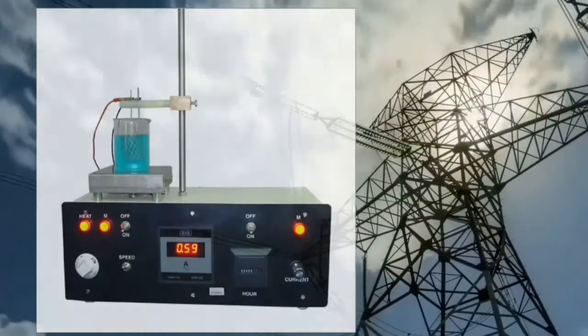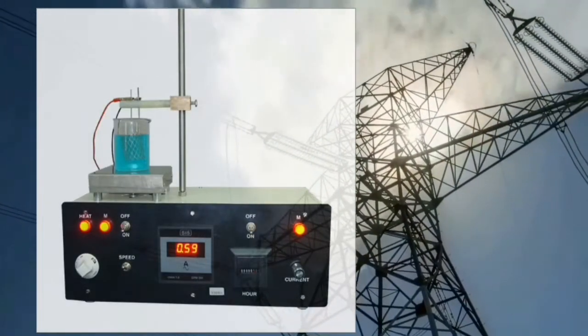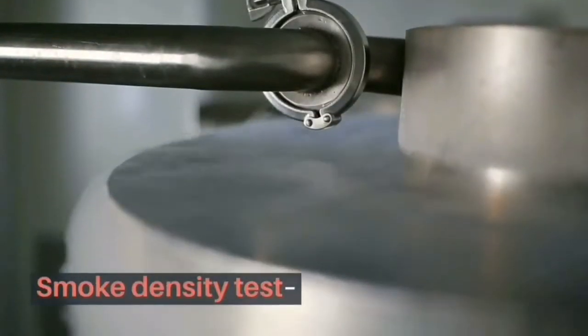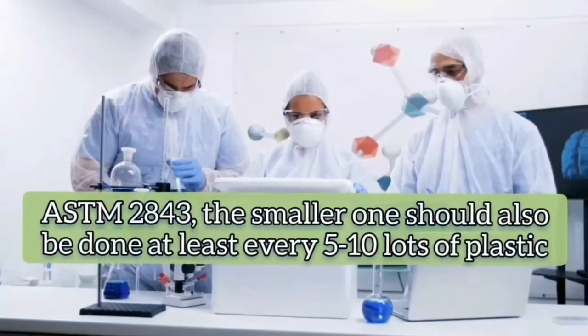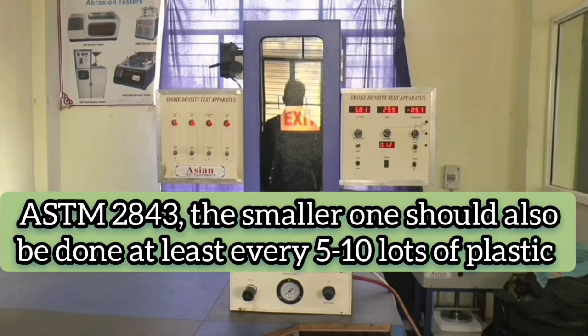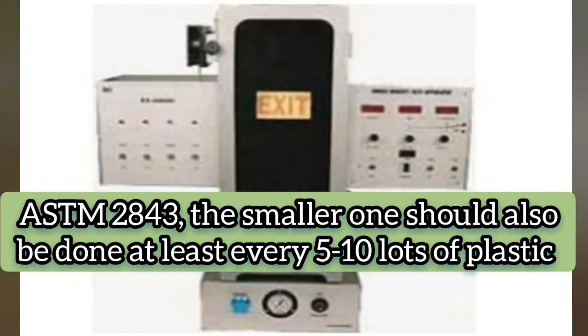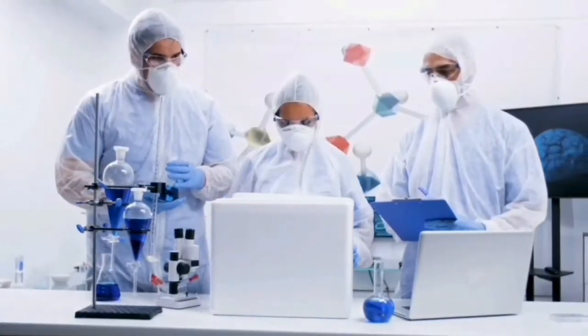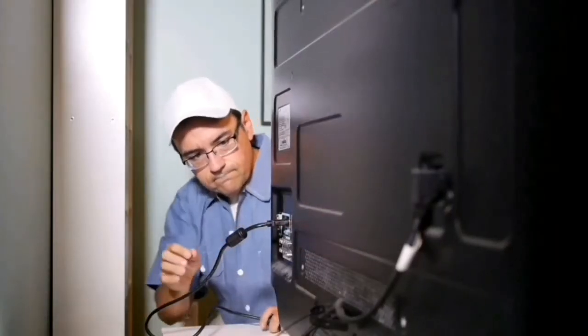Conductor purity: if your supplier is not alone registered then you might want to ensure the purity of the conductor. Smoke density test ASTM 2843, the smaller one should also be done at least every 5-10 lots of plastic. This is important to know at the input itself if your compound passes the regulatory requirement or not.